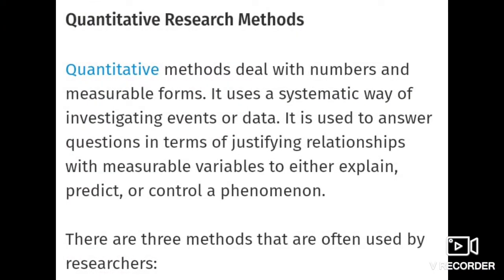Quantitative research methods deal with numbers and measurable forms. They use a systematic system of investigating events or data, and are used to answer questions in terms of justifying relationships between measurable variables — to explain, predict, or control a phenomenon. In short, quantitative means we collect numerical data, including independent and dependent variables, and results are expressed in numerical form.